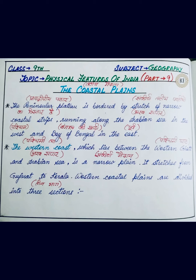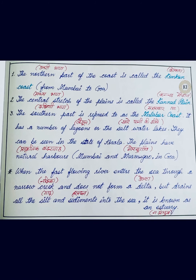It stretches from Gujarat to Kerala. So your western coast stretches from Gujarat to Kerala. The western coastal plains are divided into three main sections. The first section: the northern part of the coast is called the Konkan Coast, from Mumbai to Goa — Mumbai se Goa tak ka jo coast hai — that is your Konkan Coast.